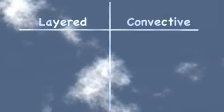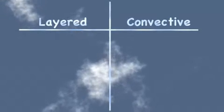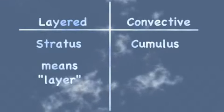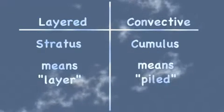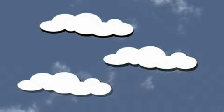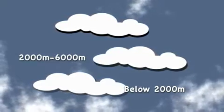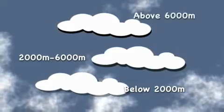Now let's explore clouds a little more. Clouds can be divided into two general categories: layered and convective. These are named stratus clouds and cumulus clouds. Stratus means layer in Latin; cumulus means piled up in Latin. These two cloud types are divided into three more groups by their altitude. Low clouds have bases below 2,000 meters, middle clouds have bases between 2,000 and 6,000 meters, and high clouds have bases above 6,000 meters.